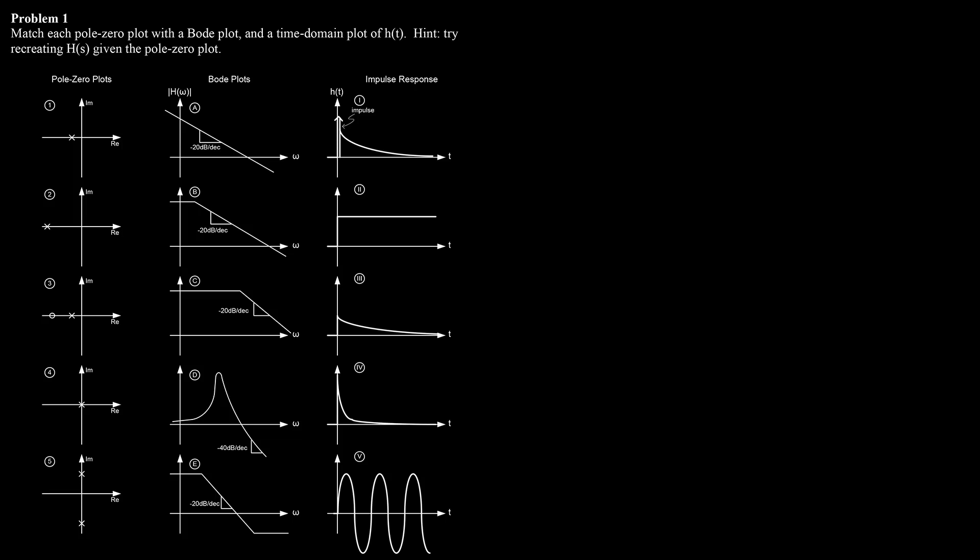The first problem is a great integrative problem that reviews topics we've talked about all semester. Each of these three columns are different ways of describing a system.